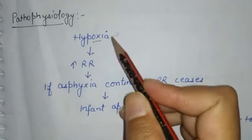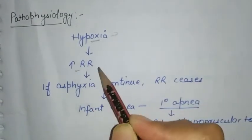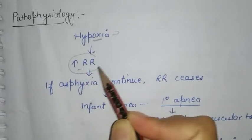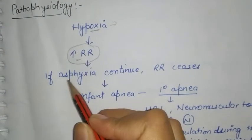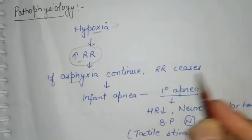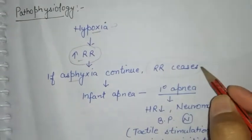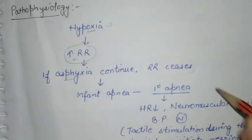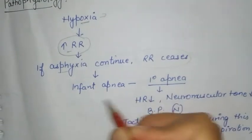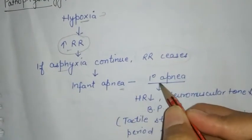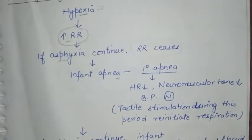In the pathophysiology of asphyxia neonatorum, due to decreased oxygen in the tissues the child will try to compensate, leading to an increased respiratory rate. If asphyxia continues, the respiratory rate gets blocked down and the infant goes into apnea — this is known as primary apnea.